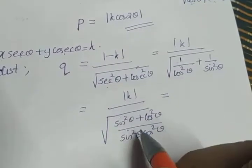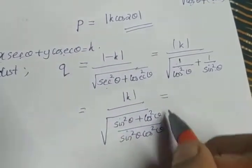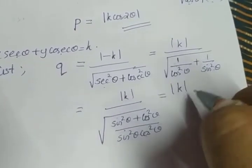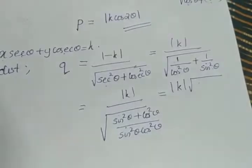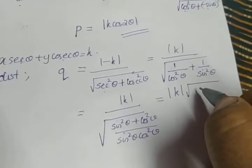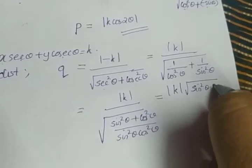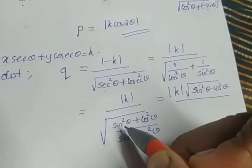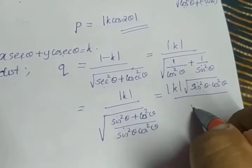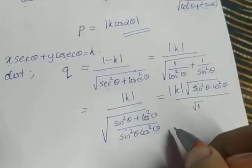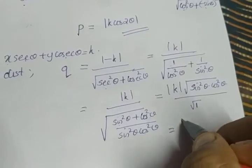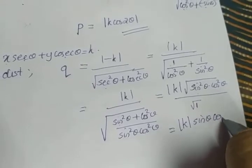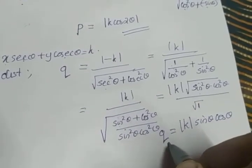Taking the conjugate, Q = |K| · √(sin²θ · cos²θ) / √(sin²θ + cos²θ). Since sin²θ + cos²θ = 1, this simplifies to Q = |K| · sinθ · cosθ. So Q = |K sinθ cosθ|.